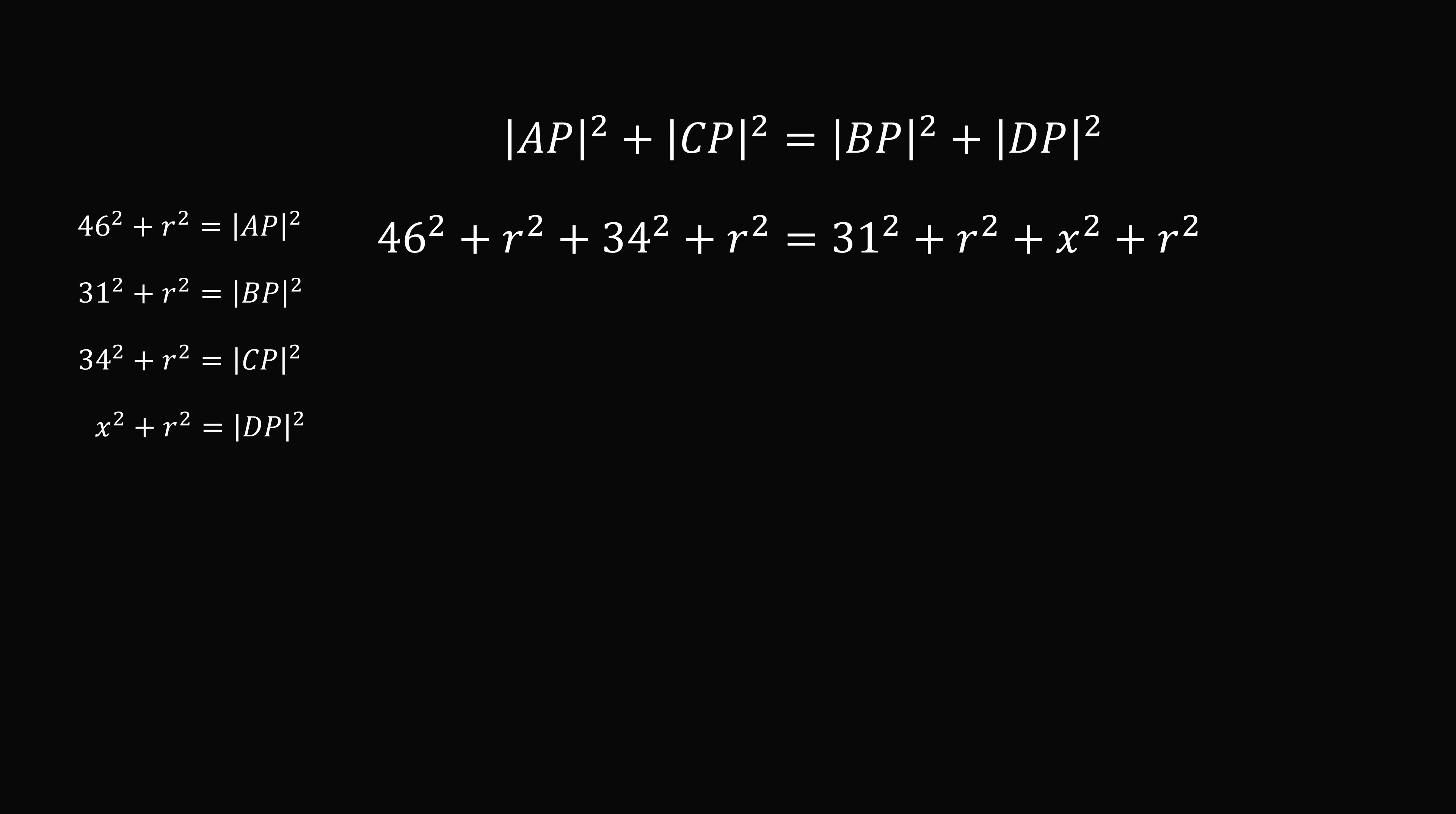We have 2R squared on both sides so we can cancel this out. So we are left with 46 squared plus 34 squared is equal to 31 squared plus X squared.